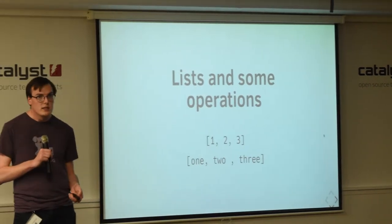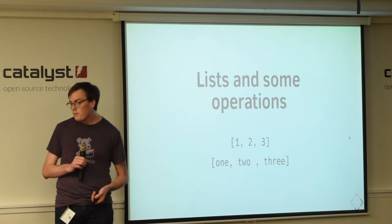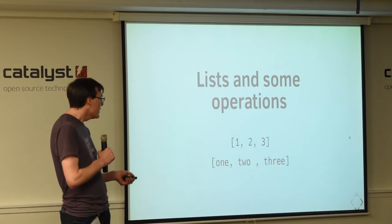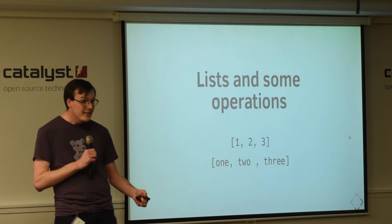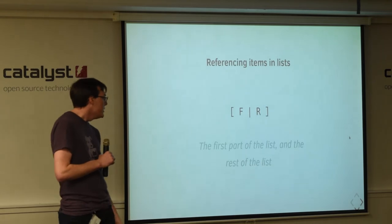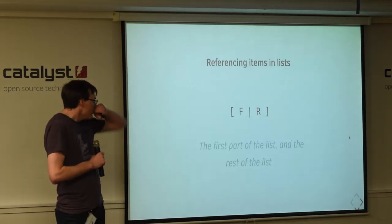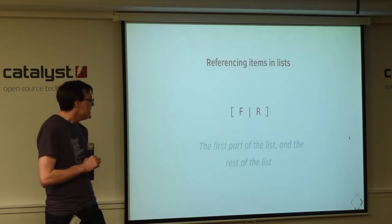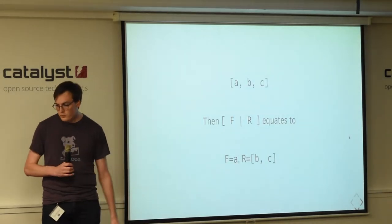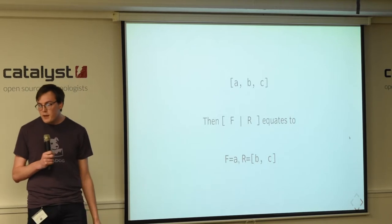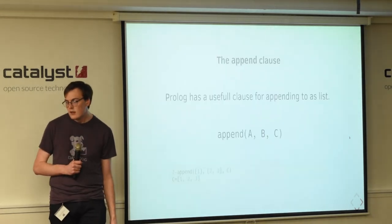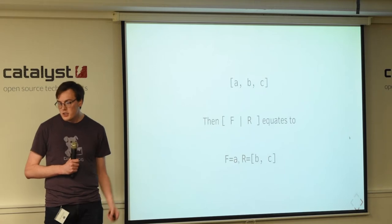Now, prologue has some other constructs. Lists are a key one. So, lists can contain numbers. They can contain constants. You can also nest lists. And to get items out of lists, the notation does get a bit weird. Because we have this notation, H bar R, which means the first part of the list and then the rest of the list. So, if we consider the list a, b, c, then H bar R equates to H is a, R is b and c. So, R is just the rest of the list.